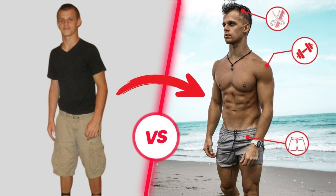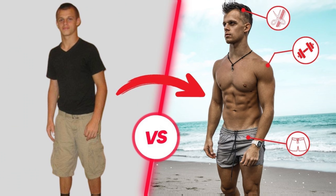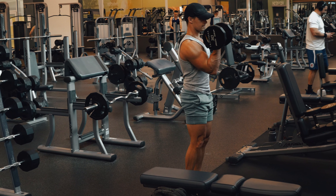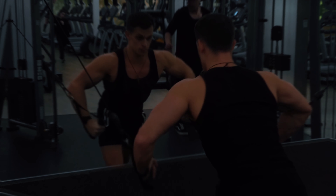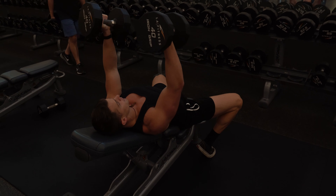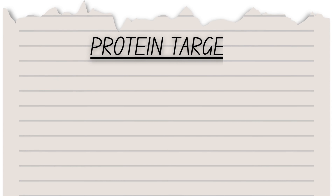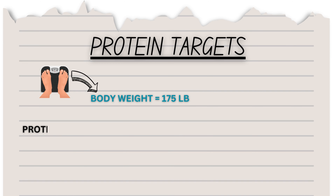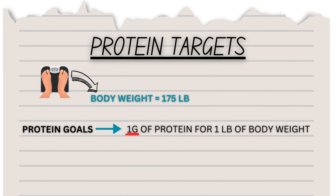If you're not getting enough protein while in a caloric deficit, your body will start to metabolize the muscle on your body — and that is a really bad thing if you're trying to look your best or preserve the muscle you worked hard for. We want to preserve as much muscle as possible, so we have to hit our protein targets. A good target is at least one gram of protein per pound of body weight.